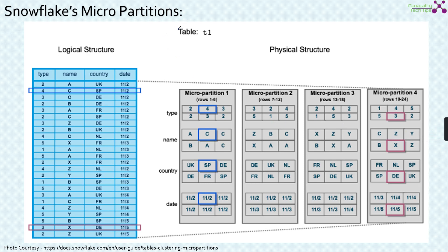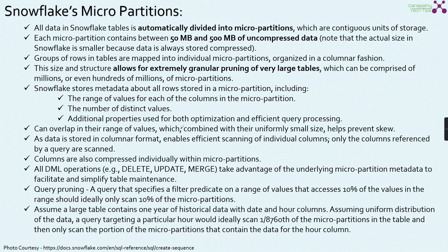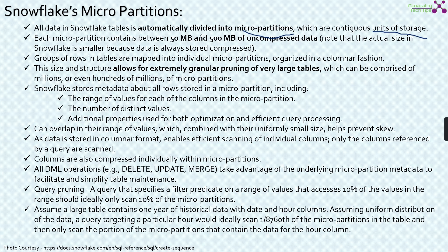Now let's look at the technical information available to us. All data in Snowflake tables is automatically divided into micro partitions, which are contiguous units of storage. Whenever data is loaded into Snowflake, it is optimized, compressed, and stored in a columnar format. Snowflake automatically performs the micro partitioning when data is loaded. Each micro partition contains 50 MB to 500 MB of uncompressed data, though the actual size is smaller because data is always stored in compressed format.